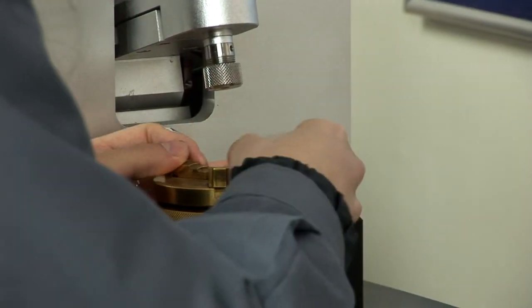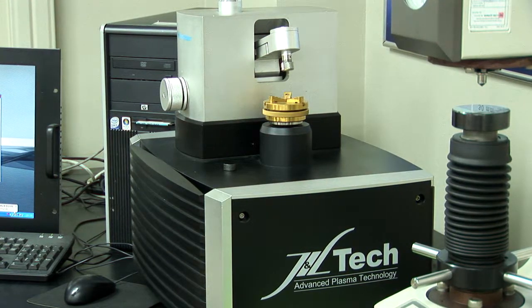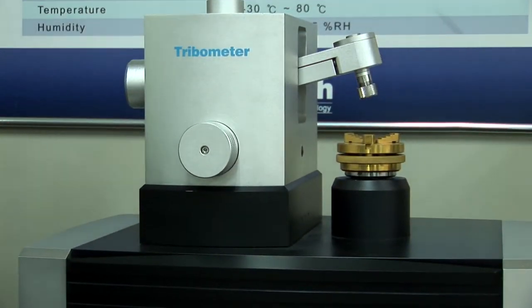The Tribometer uses the ball-on-disc method to measure the exact amount of friction and abrasive wear in thin films.